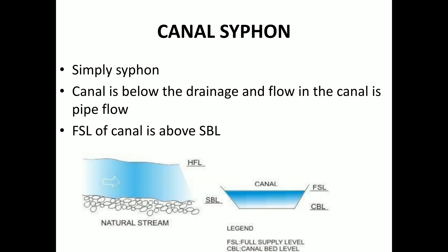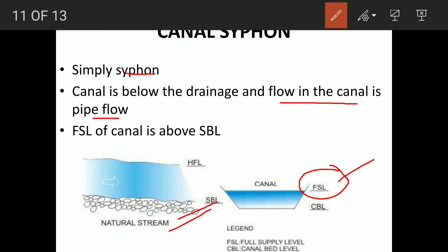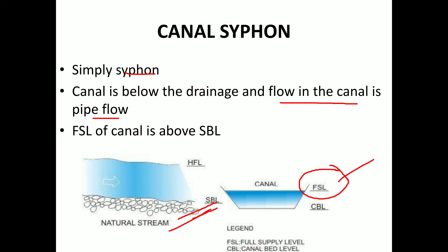In the canal siphon, the canal flows as pipe flow beneath the drainage. The canal full supply level and stream bed level are such that the canal passes under the drainage in a siphon arrangement. This structure is also called a canal siphon or siphon.